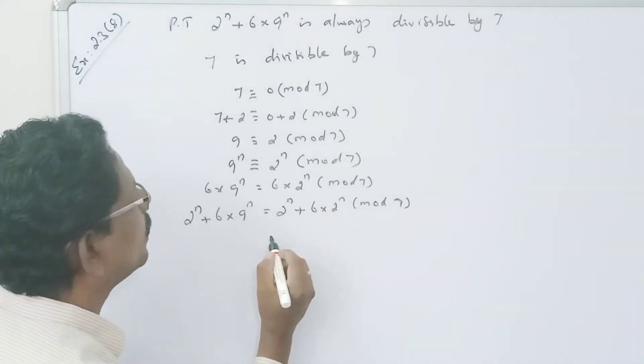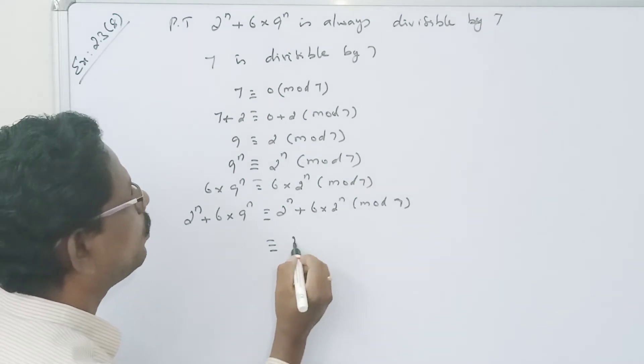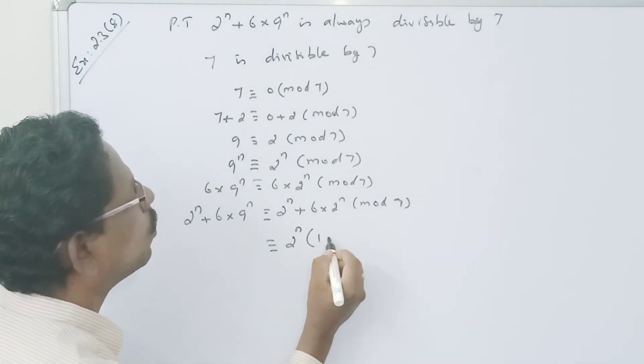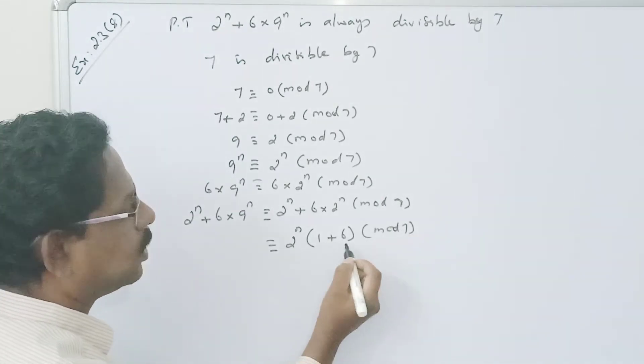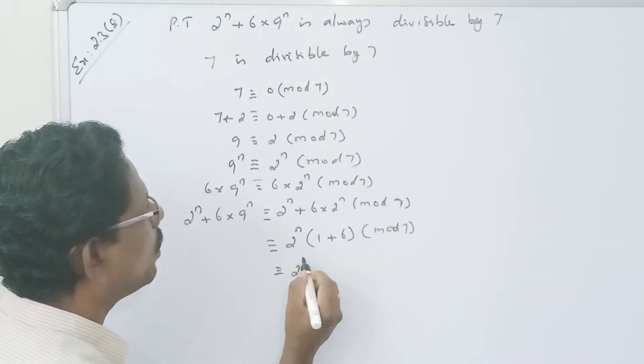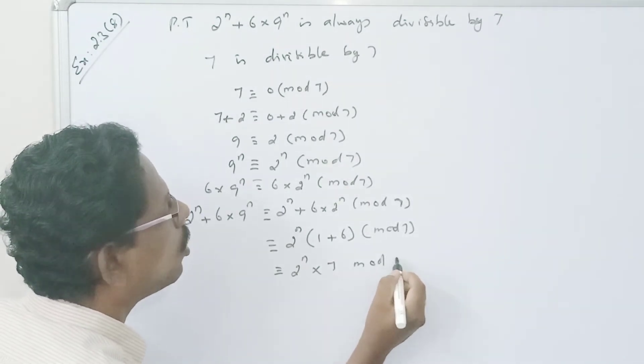2 power n take outside. 2 power n into 1 plus 6 mod 7. 1 plus 6 is 7. 2 power n into 7 mod 7.